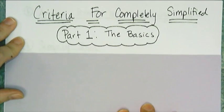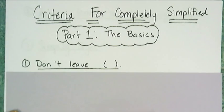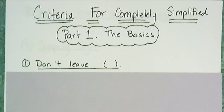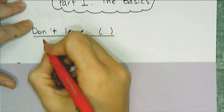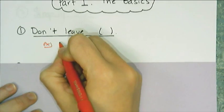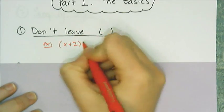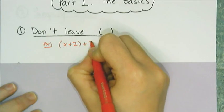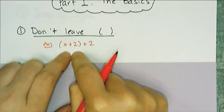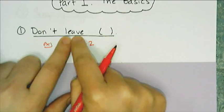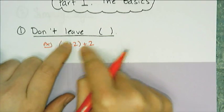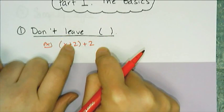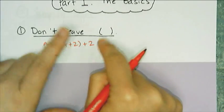The first rule is to not leave any parentheses. Your expression is not simplified if there are still parentheses in it. For example, the quantity (x + 2) + 2 is not simplified. There's a property called the associative property that allows me to remove the parentheses and add 2 plus 2 to get 4.